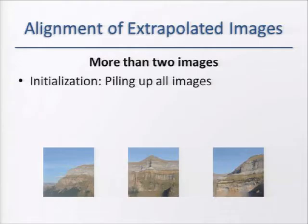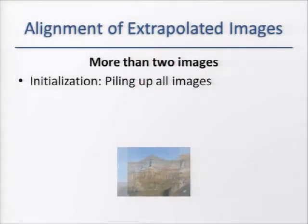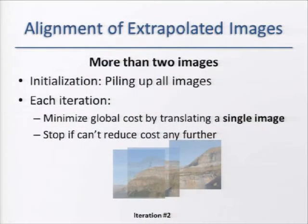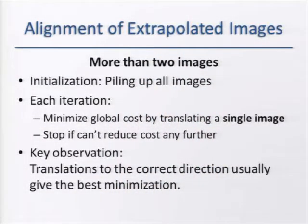If we have more than two images, we define the global cost as the sum of pairwise alignment costs. The exhaustive search in this case is much too expensive, and this is where the iterative greedy search comes in. We begin by piling all images on top of each other and evaluate the global cost. At each iteration we try to minimize the global cost by translating a single image. For example, at the first iteration we found moving one image to the left reduces the global cost; in the next, moving another image to the right does so. If we cannot reduce the cost further, we stop. The key observation is that translations in the correct direction usually give the best minimization.